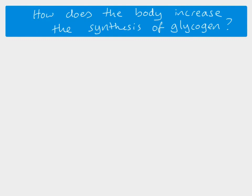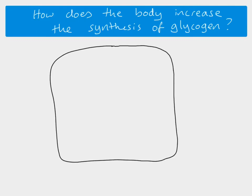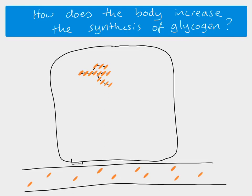Returning to the synthesis of glycogen — glycogenesis is one of the key processes the body uses to reduce blood glucose concentration. Inside a cell containing glycogen molecules, there is an insulin receptor on the cell surface membrane. When blood glucose concentration rises, insulin released from the pancreas binds to this receptor, which causes the activation of an enzyme inside the cell called glucokinase.